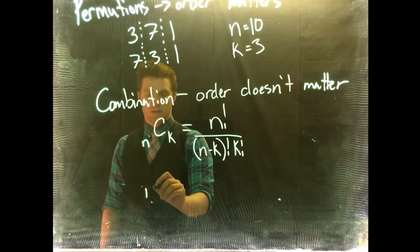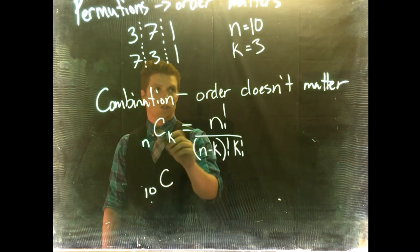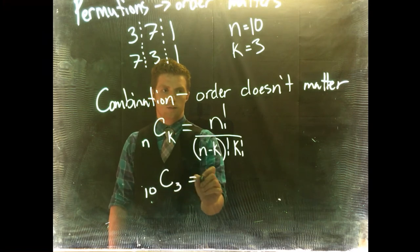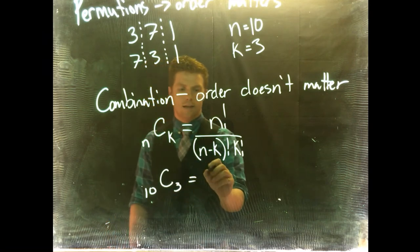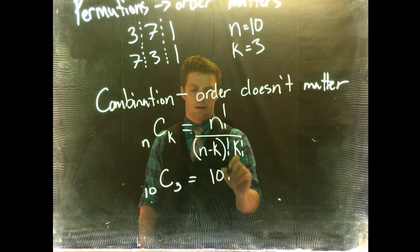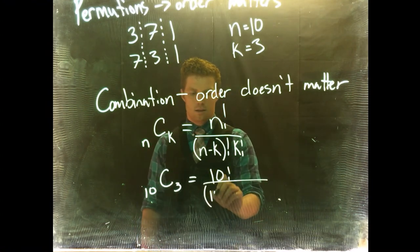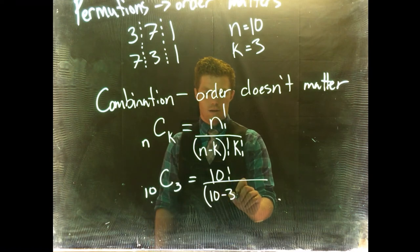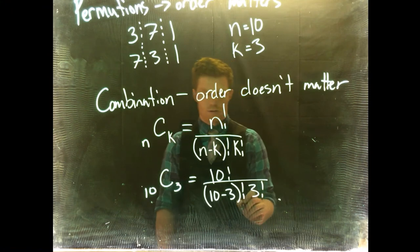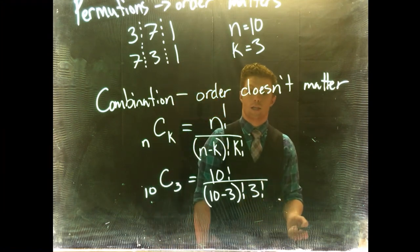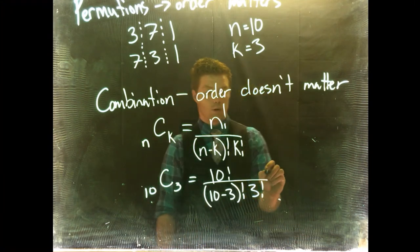So n would be 10 combination k is 3. This would be equal to n, 10 factorial, 10 factorial divided by 10 minus 3 factorial times 3 factorial.